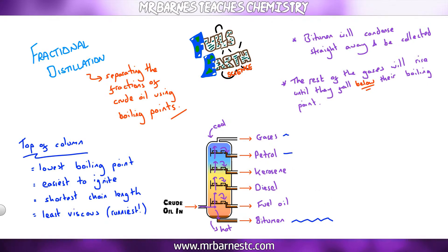So if asked to compare petrol to diesel — knowing petrol is near the top — you would say petrol has the lowest boiling point, is the easiest to ignite, has the shortest chain length, and is the runniest, i.e. the least viscous.